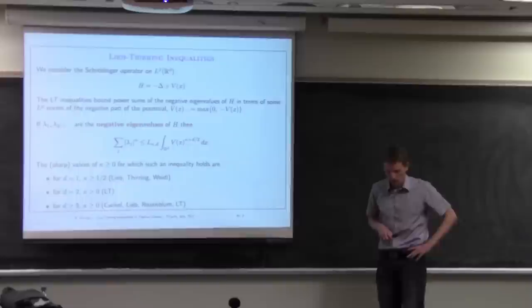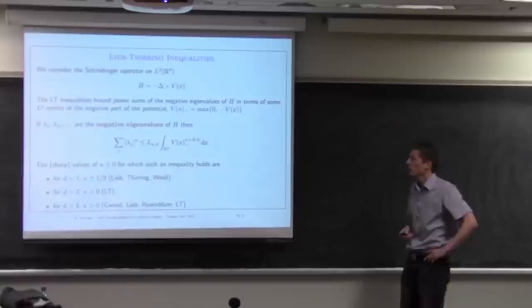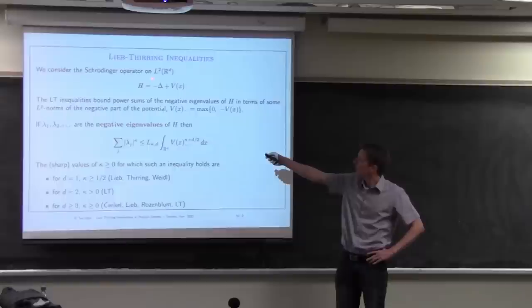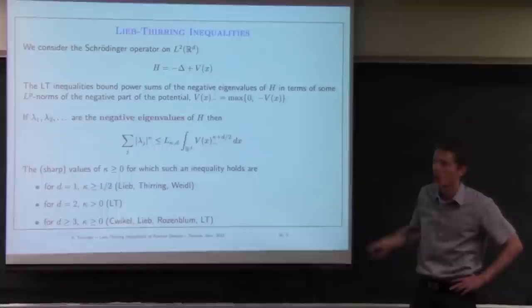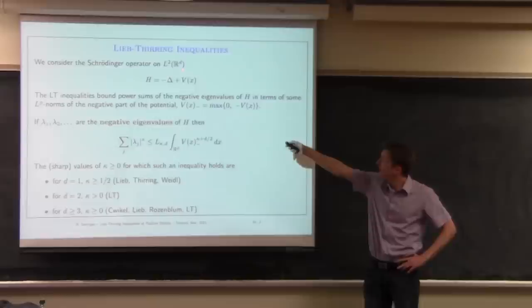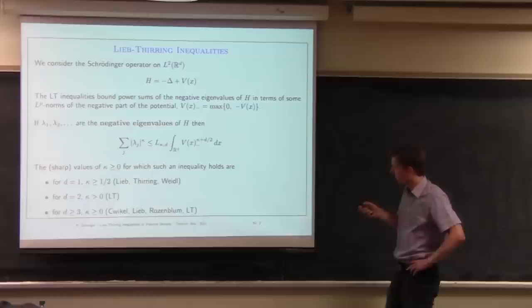I will start by reminding you — or if you haven't seen it, explaining — what Lieb-Thirring inequalities are. They are well-established and often used tools in analysis, but their origin and motivation actually comes from physics, in particular from understanding the behavior of large systems in quantum mechanics, specifically the stability of matter.